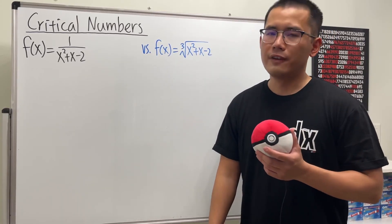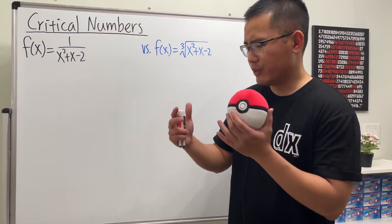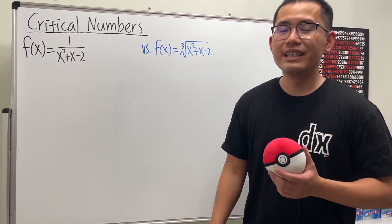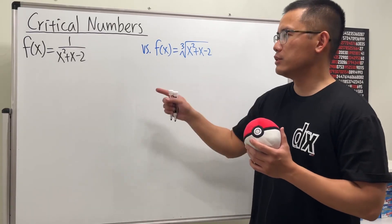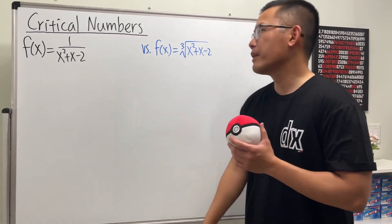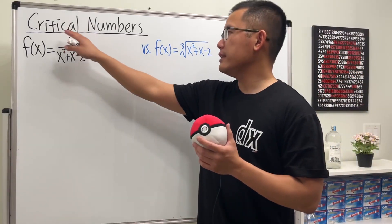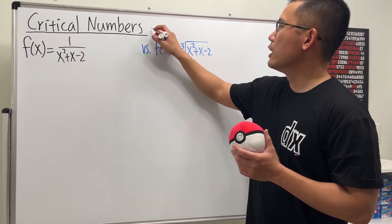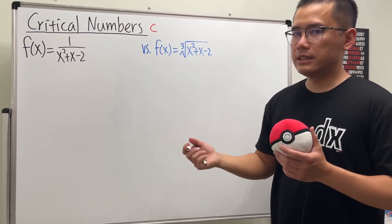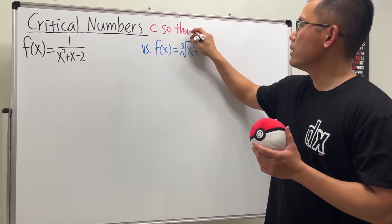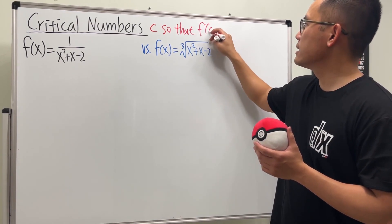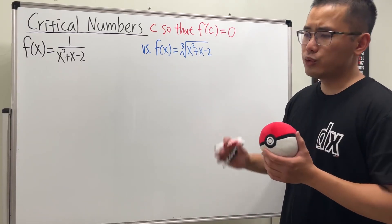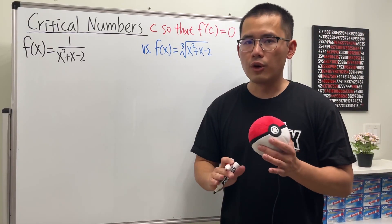When we are trying to find the critical numbers of a function, sometimes we have to set the denominator to zero, but sometimes we don't. To make that clear, here are two examples. When finding critical numbers, we pay attention to two cases. The first case is finding the value c so that the derivative of the function at c is equal to zero.